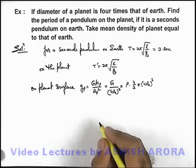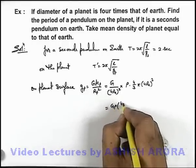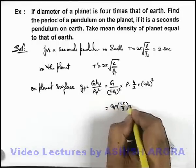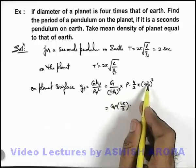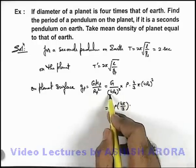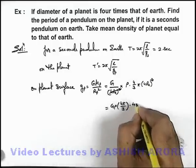Now on simplifying this, we'll be getting a relation G ρ 4π/3 multiplied by, here we are having one 4Rₑ left, as this 4Rₑ squared and this cube gets cancelled out. So this will be 4Rₑ.